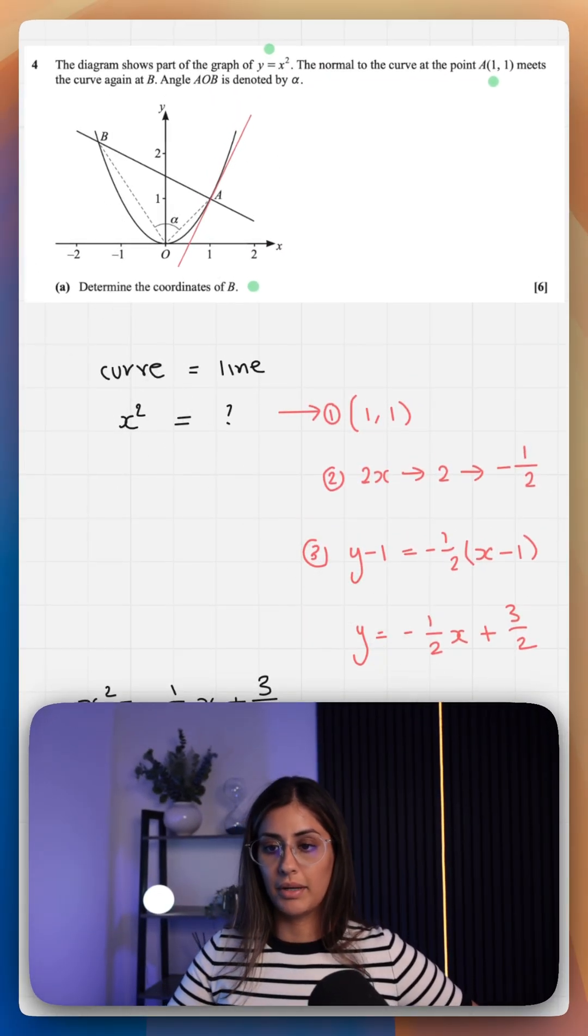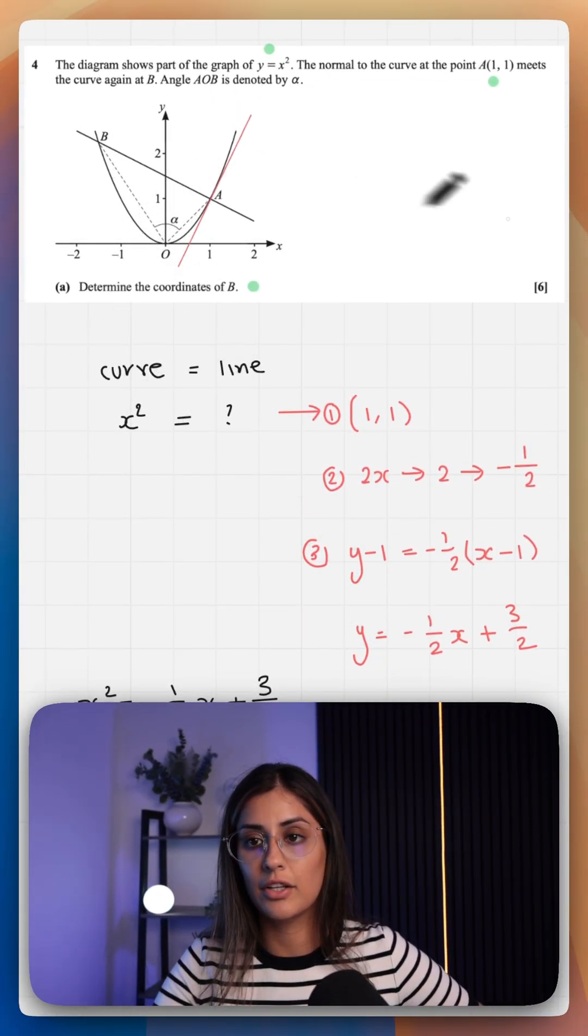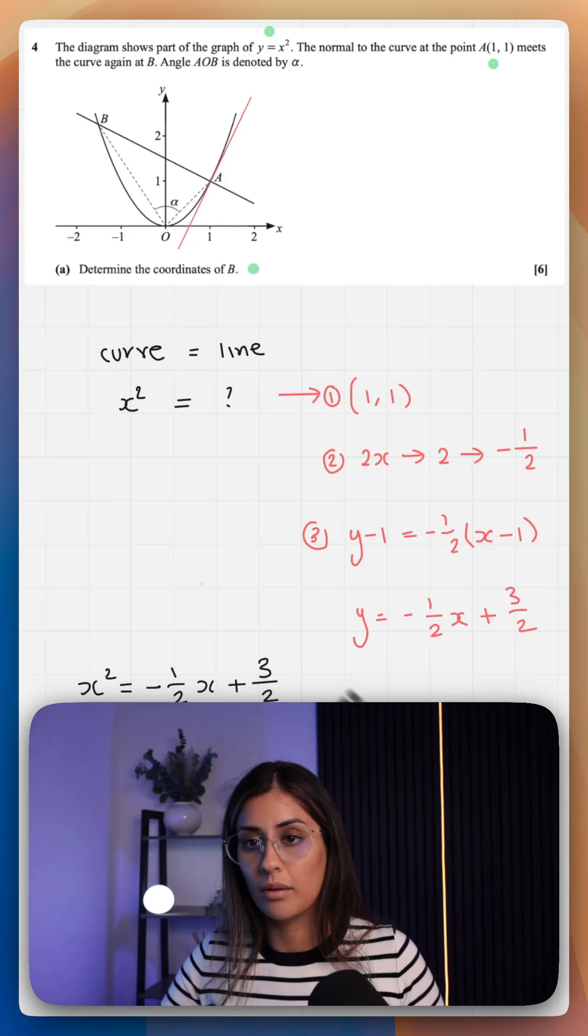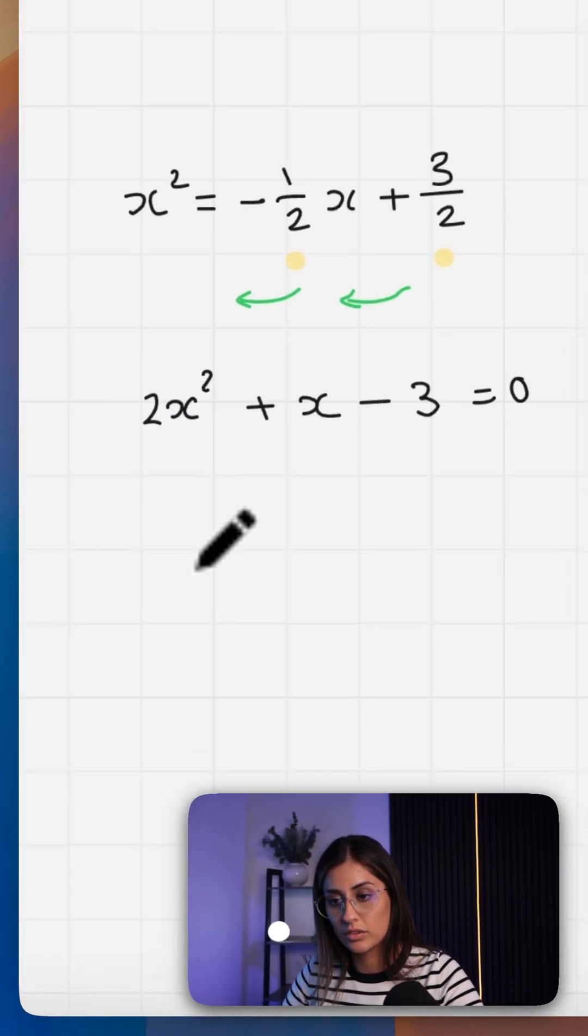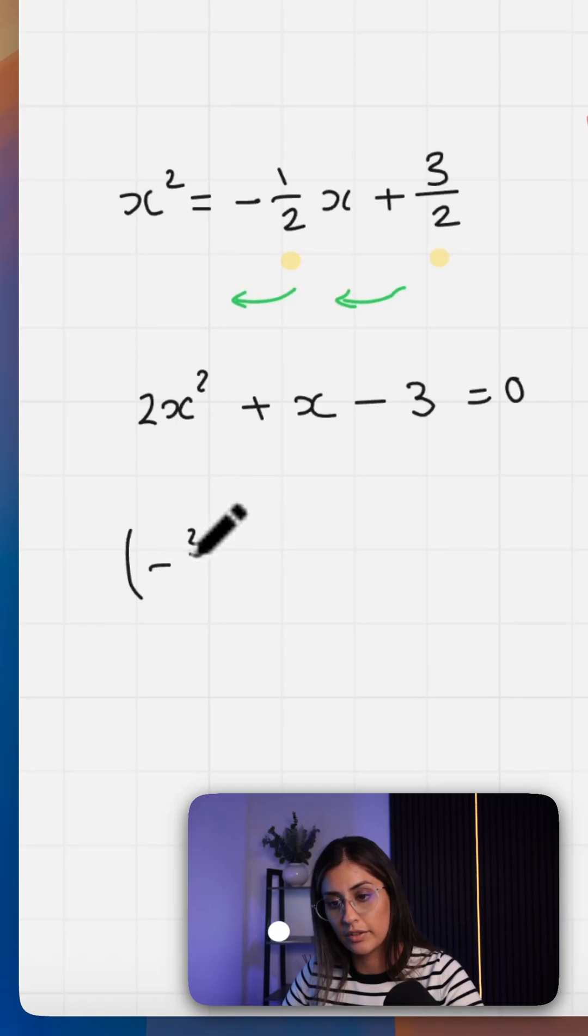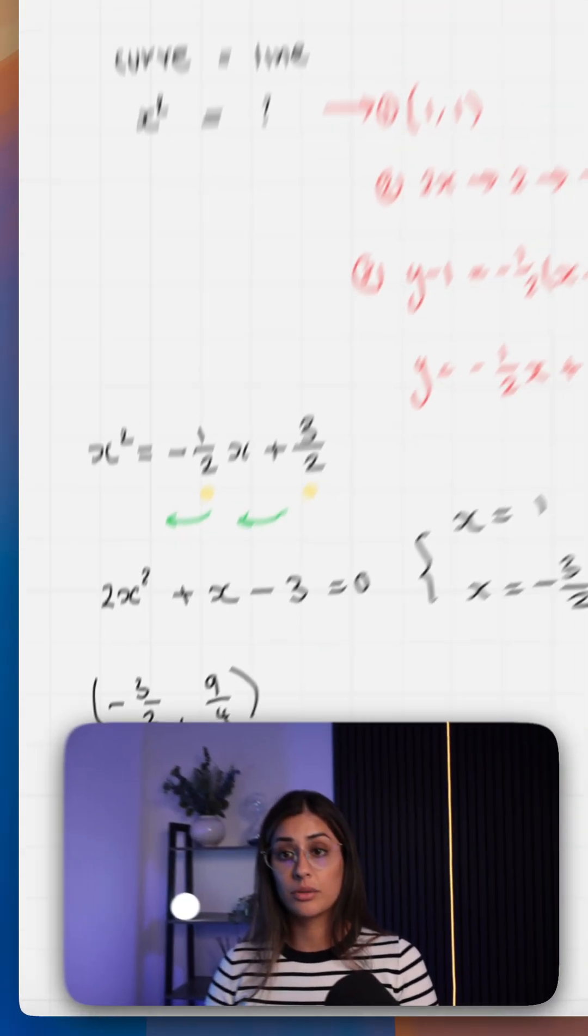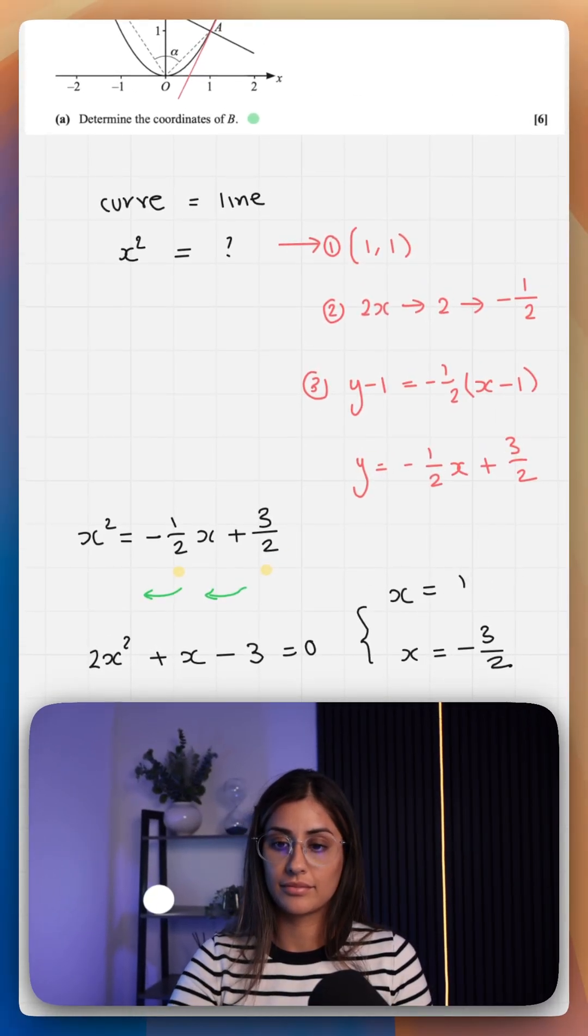So it looks like B is minus 3/2 as our x value. We need to find the y value. I'm just going to plug it into y equals x squared. And that gives us minus 3/2 and 9/4. And that should be your coordinates of B.